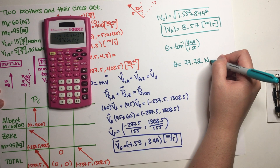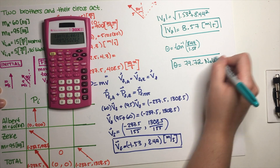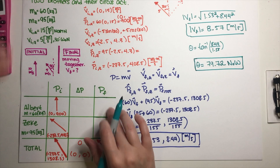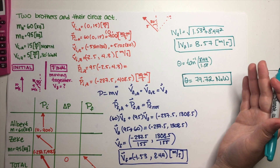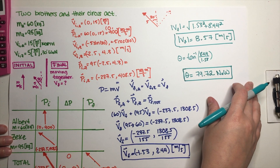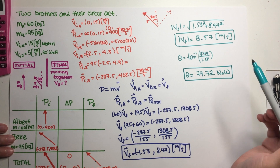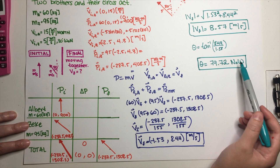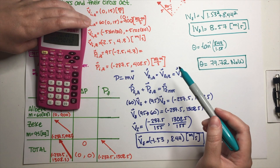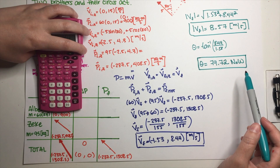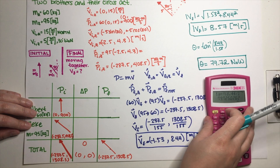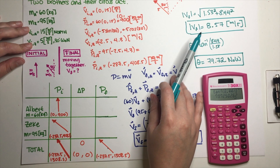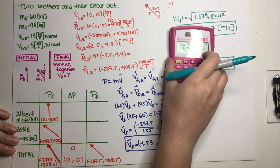The direction is 79.72 degrees north of west. Your calculator won't tell you whether it's north of west or west of north — that's something you have to visualize yourself. Completing the momentum chart makes it very clear, because when you look at the final velocity vector you can see it starts on the west axis and angles toward north, which is why we describe it as north of west. Momentum charts are super helpful for these problems.